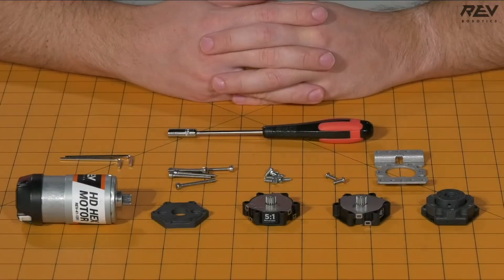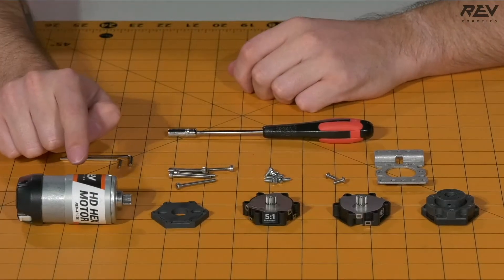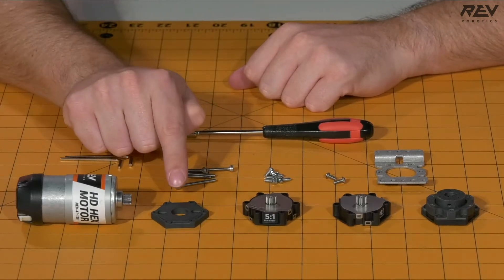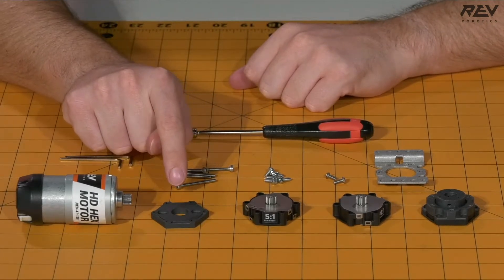We are building the Ultraplanetary gearbox assembly. For this step you will need an HD hex motor with the Ultraplanetary pinion pre-pressed on, an Ultraplanetary mounting plate,